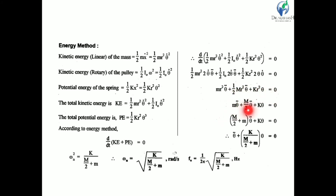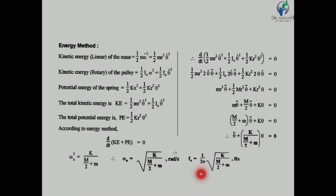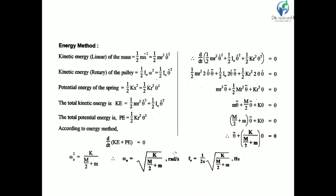This gives: m·theta-double-dot + (M/2)·theta-double-dot + k·theta = 0, or (M/2 + m)·theta-double-dot + k·theta = 0. Rearranging: theta-double-dot + [k / (M/2 + m)]·theta = 0. Comparing with simple harmonic motion, omega_n = √[k / (M/2 + m)], and natural frequency f_n = (1/2π)·√[k / (M/2 + m)] Hz. This is the natural frequency derived using the energy method.